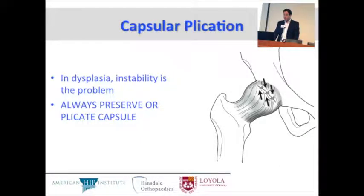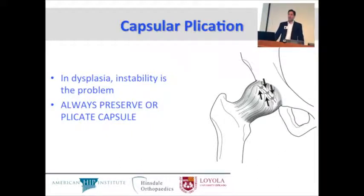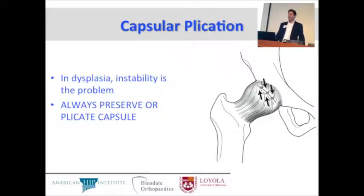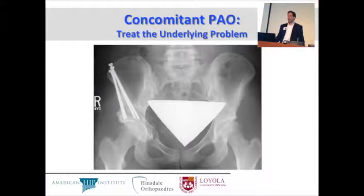Dr. Jackson talked about the technique we've advocated for capsular plication. Remember that in dysplasia, instability is the problem — there's a bony reason for the instability, but there's also a soft tissue reason. If we're doing any kind of arthroscopy in a patient who has instability or dysplasia, always preserve or plicate the capsule. We certainly don't want to sacrifice any of the static stabilizers of the hip in this kind of situation.